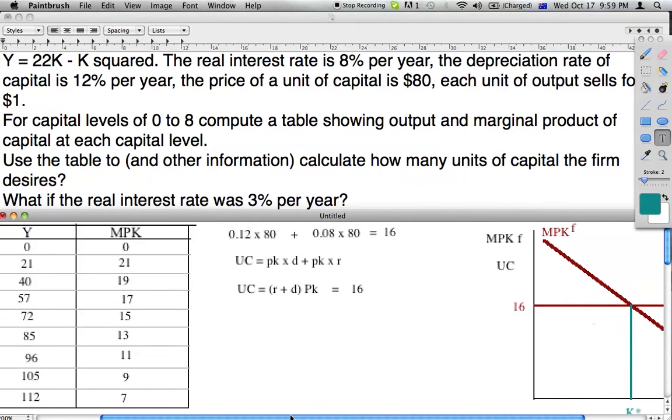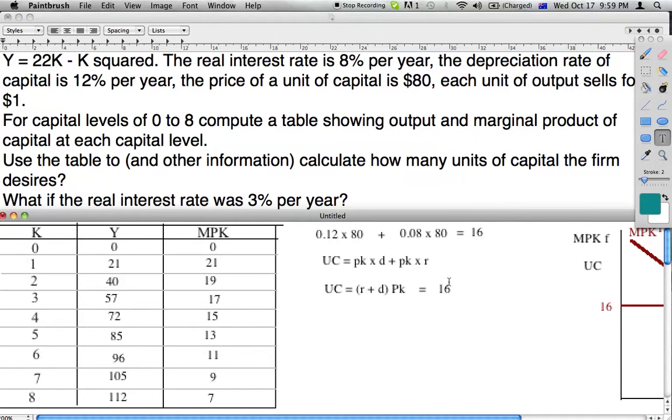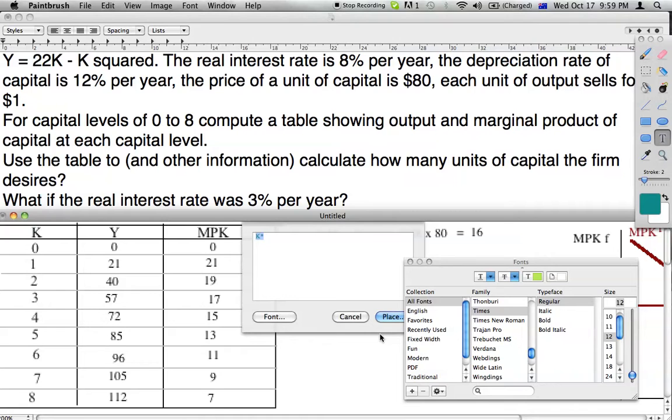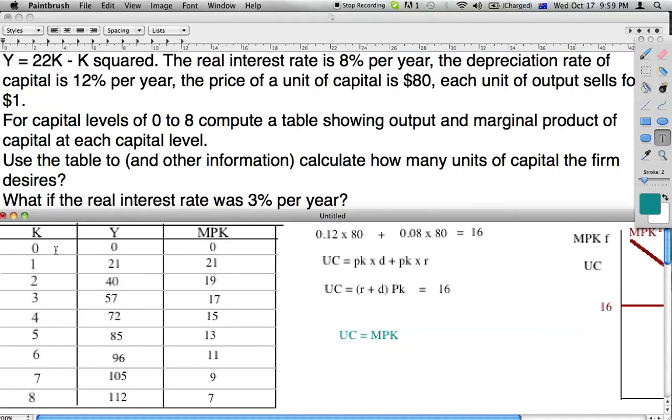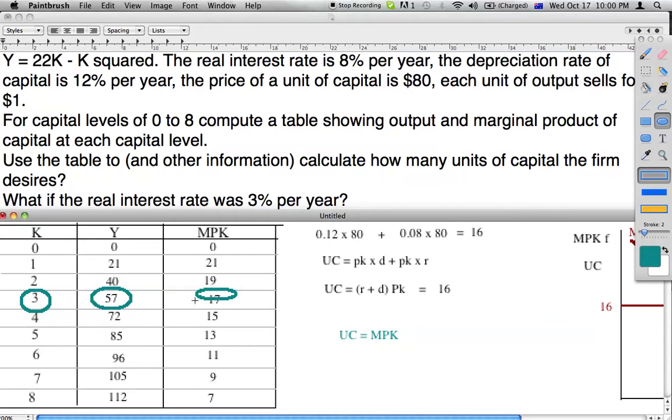So looking at the table, if the user cost of capital is 16, we're going to keep getting more workers until user cost equals MPK. We get zero workers, one worker, two workers. We can go from two to three workers and it adds 17 of benefit, so we're going to hire three workers. But if we go from three to four we only get 15 benefit. So the answer is three workers. This will be our output and marginal productivity of capital.